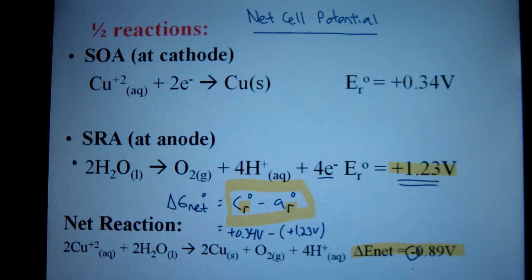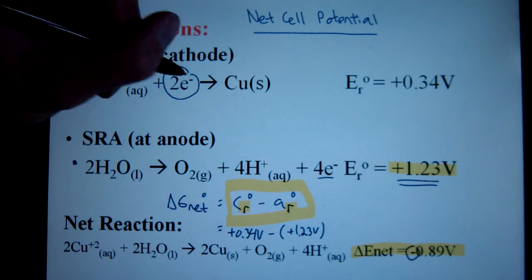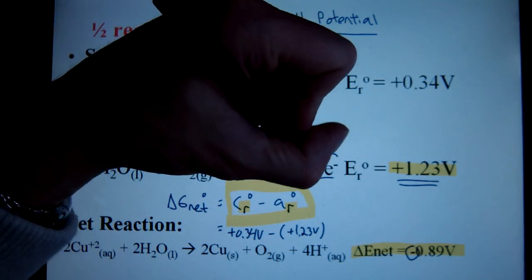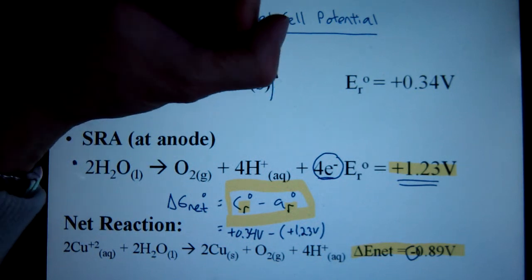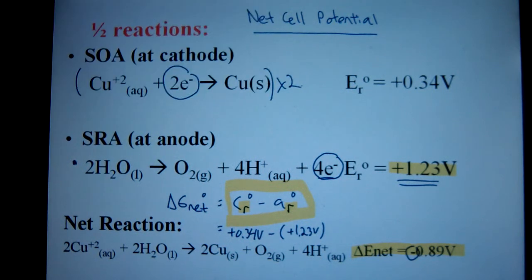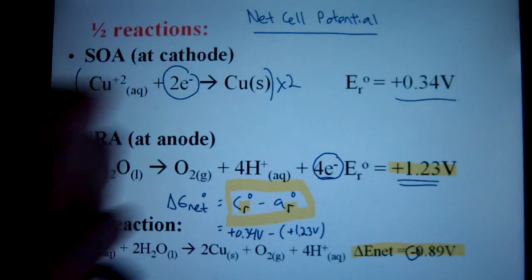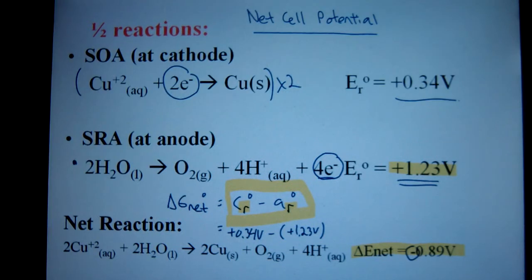Something else to note, other than the fact that we're never going to change our signs of our reduction potentials, is that even though this is a 2 electron gain and we have a 4 electron loss here, and I would therefore have to multiply this half reaction by 2, I still don't do anything to this voltage. The only thing that can alter these voltages are concentration changes, and the equations we use with Chemistry 30 curriculum don't take that into account.